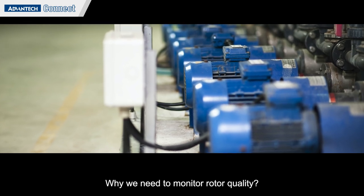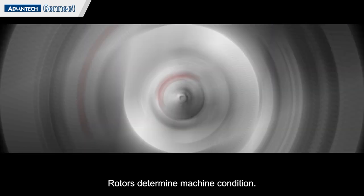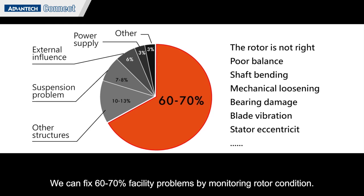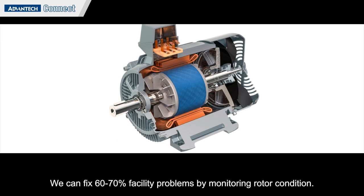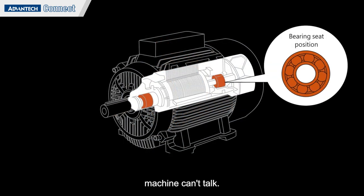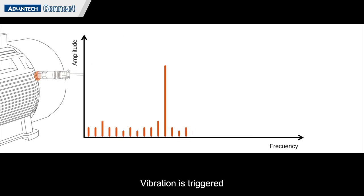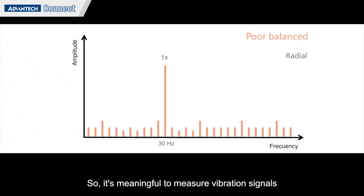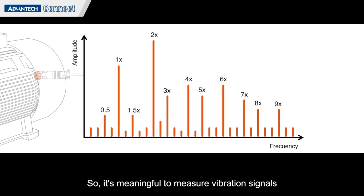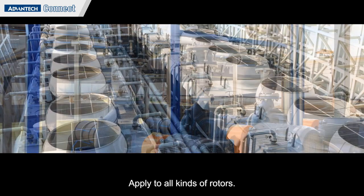Why do we need to monitor rotor quality? Rotors determine machine condition — we can fix 60 to 70 percent of facility problems by monitoring rotor condition. Even for a new machine, the condition can't be perfect. Vibration is triggered by reciprocating forces while the machine works, so it's meaningful to measure vibration signals for machine condition interpretation.